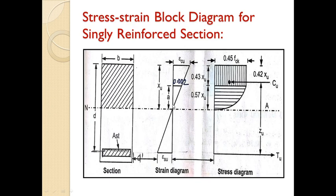This is the strain diagram and this is the stress diagram. In the strain diagram, based on the first assumption — plane section remains plane before and after bending — the strain distribution is linear. Before bending the section is straight, and after bending it may be inclined but remains plane. Epsilon_u represents the maximum compressive strain, which we know is 0.0035, and the strain of 0.002 is the point up to which stress is parabolic.